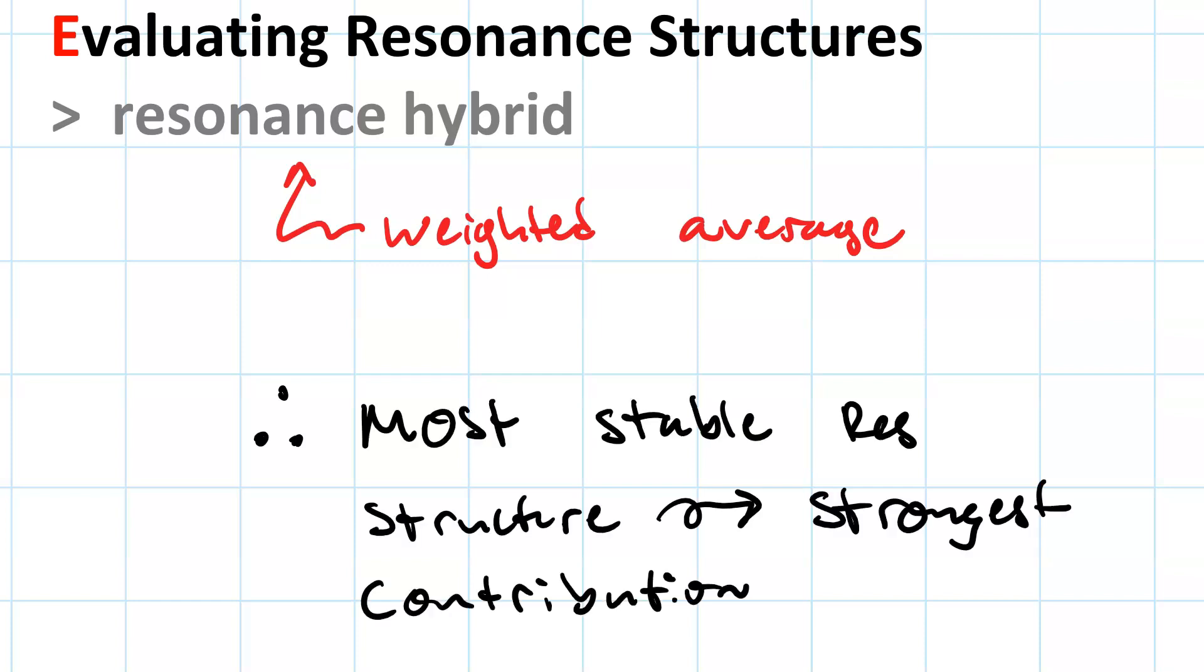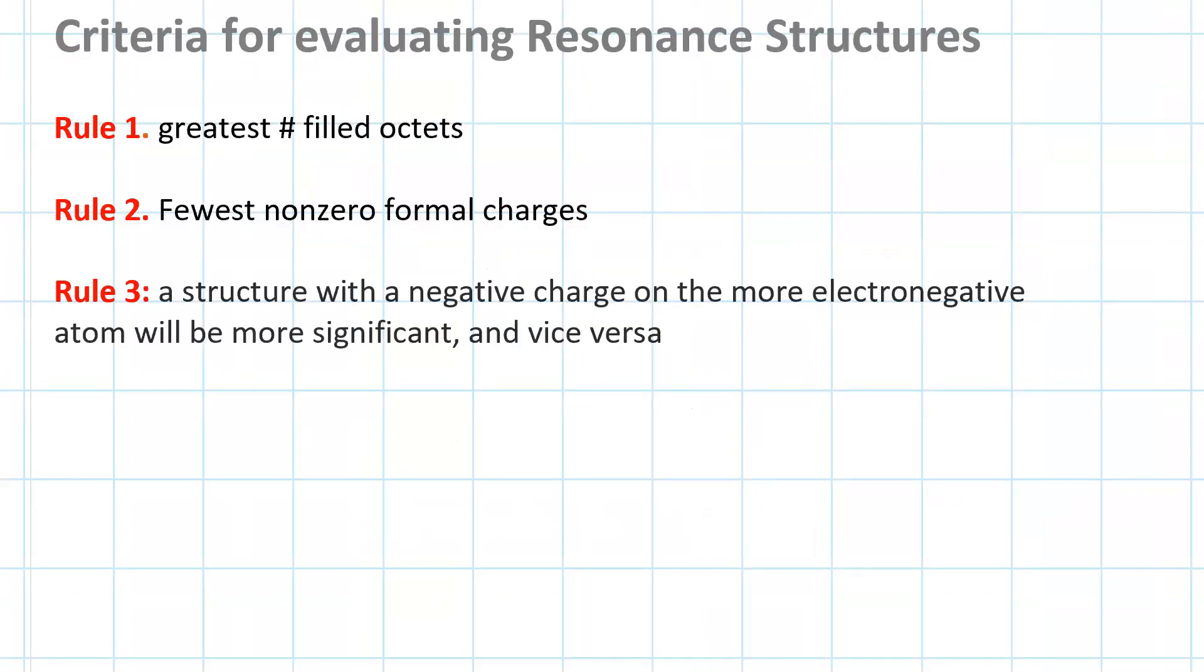So, what criteria do we use? When evaluating resonance structures, we have three rules, and these go in descending order of importance. That means rule number one is the most important, then rule number two, then rule number three.